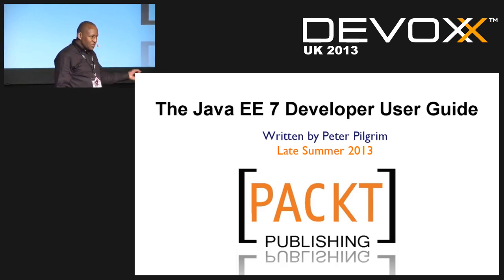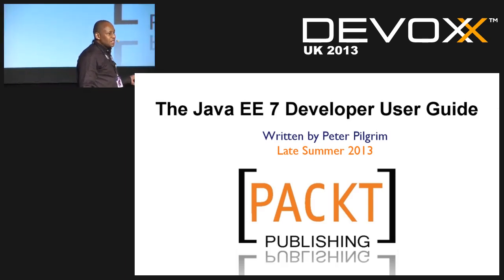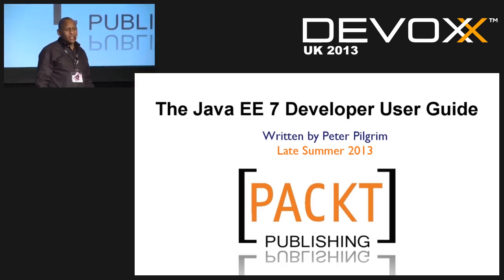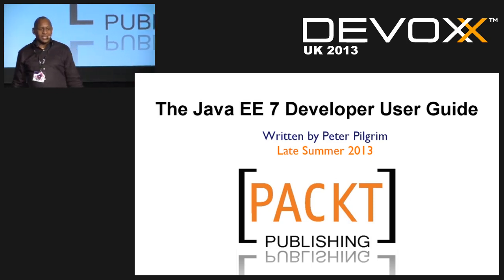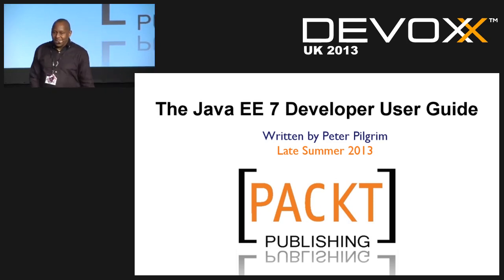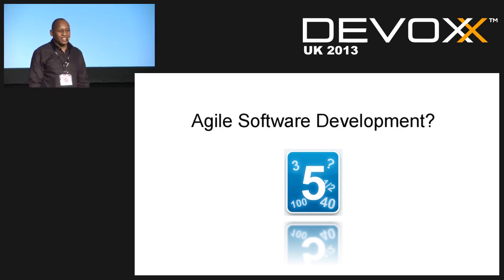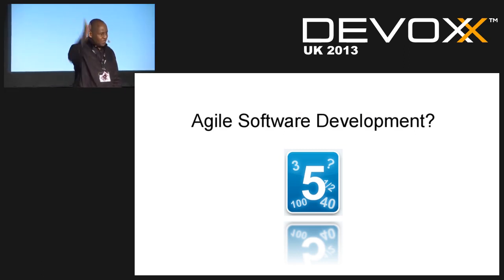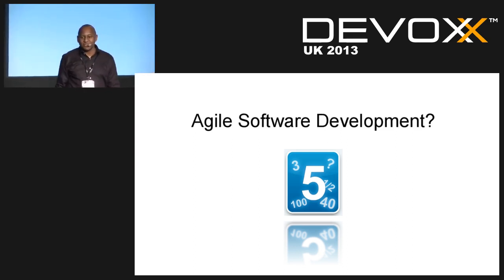I'm also the author of an up-and-coming book called the Java EE7 Developer User Guide — I'm halfway through writing it. Now, if you consider yourself an Agile developer please raise your hands. I would say that's more than 75% of the audience.